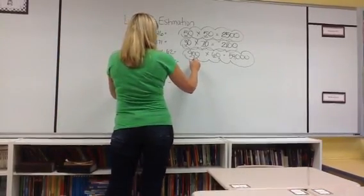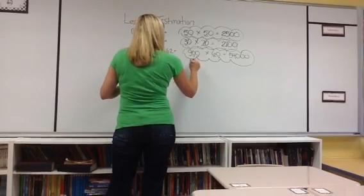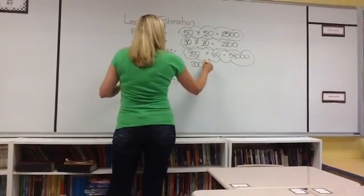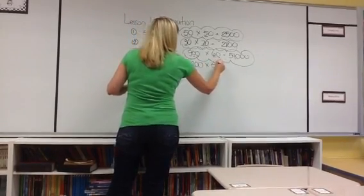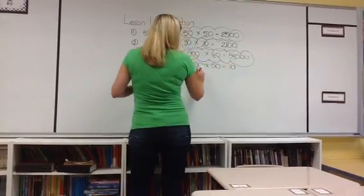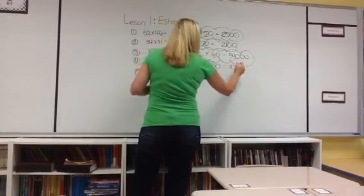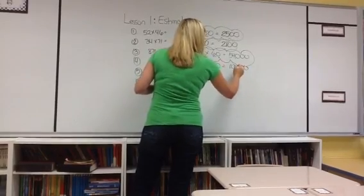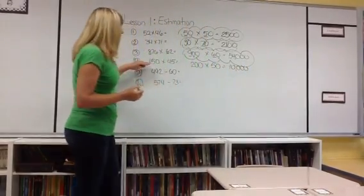I would round that 150 to 200 times 50. 2 times 5 is 10, so 200 times 50 is 10,000.